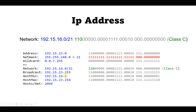The first usable host IP starts from .1 and the last goes to 23.254. With /24 the first three octets are fixed and only the last octet changes, giving IPs from 1 to 254. But here with /21, we've borrowed three bits from the fourth octet as well, so it varies from 000 to 111 in binary — that's why the range shifts from 16 to 23, which is 2 to the power of 3, giving 8 possible values.